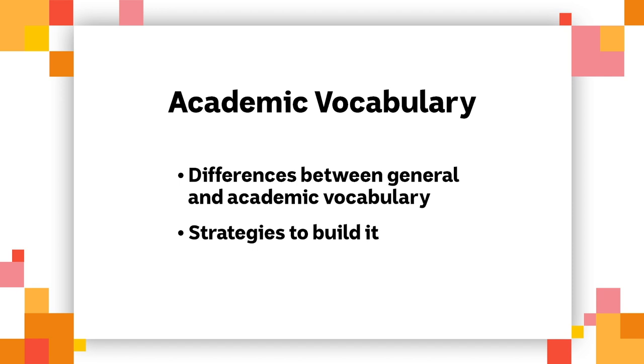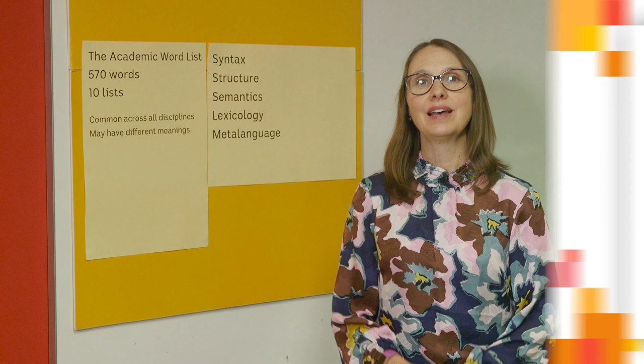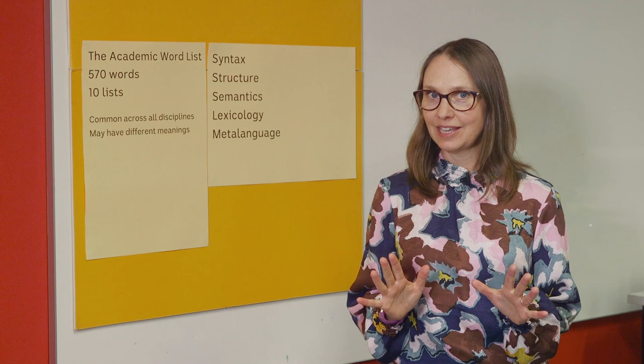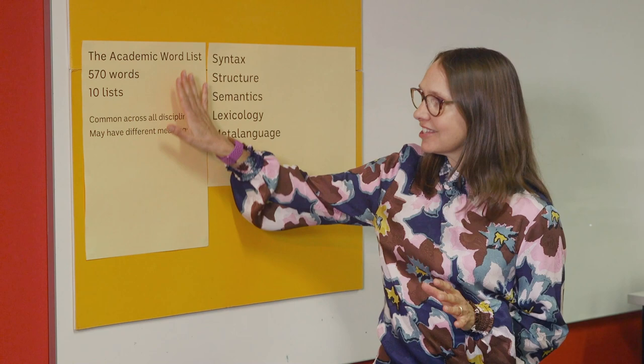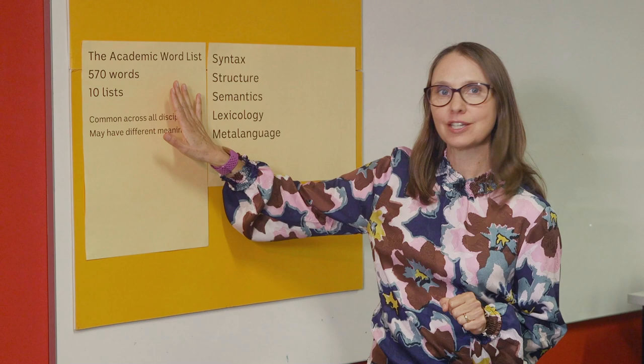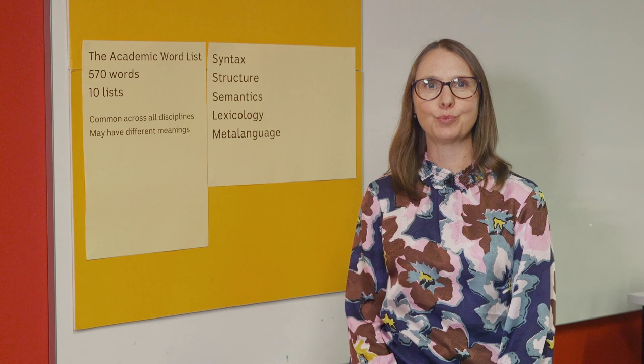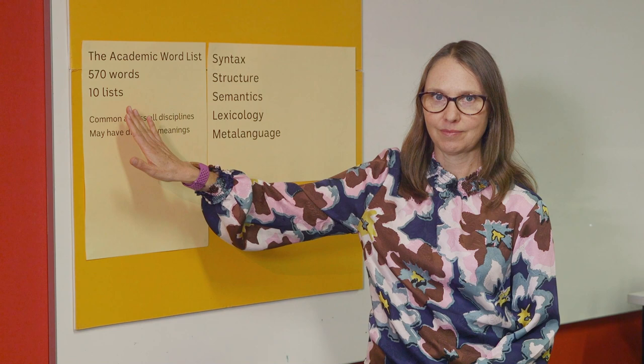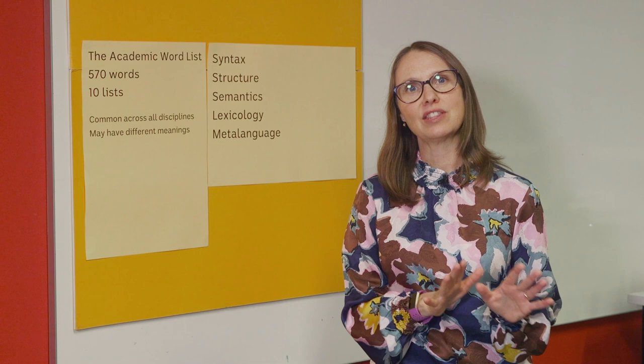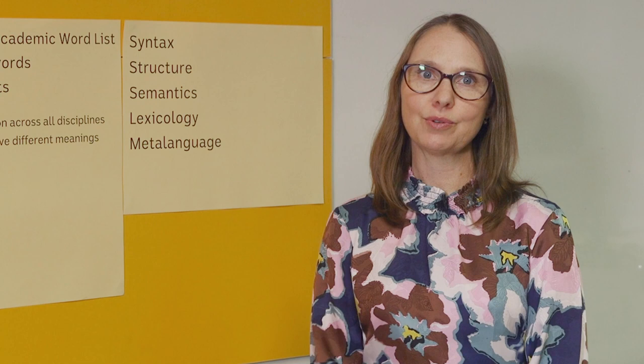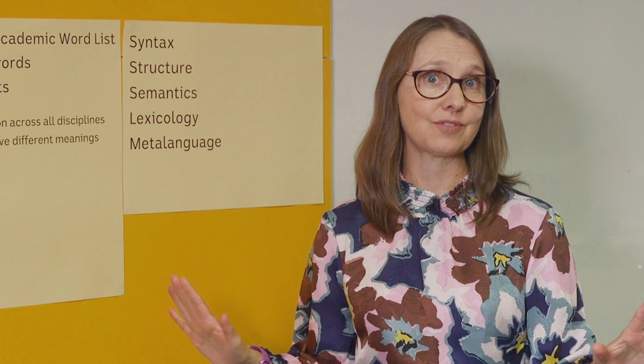We'll look at some of the strategies you can use to build your vocabulary so that you can do really well at university. A good place to start is to get familiar with the academic word list — a list of 570 key words that you need to know to do well at university. You can find it online or in a textbook. These words are sorted into 10 lists, with list 1 having the most commonly used words and list 10 having the least commonly used. It does not matter what subject you are studying; these words will be useful because they're common across all disciplines from the arts to medicine.